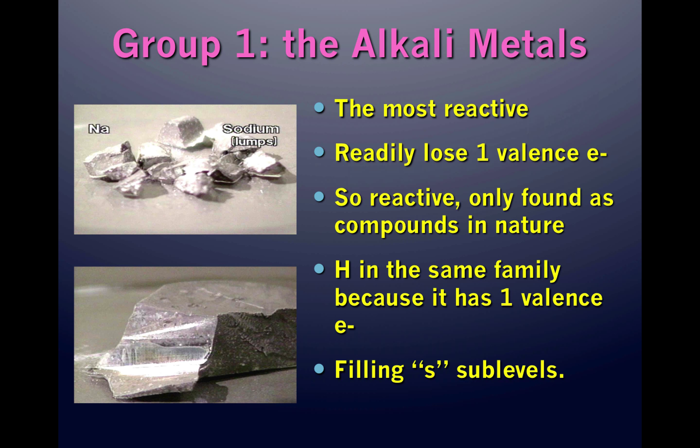The group 1 metals are called the alkali metals. They are the most reactive metals and readily lose one valence electron. They are so reactive that they are only found as compounds in nature — for example, you cannot find a hunk of sodium on the street; instead, sodium is most often found as sodium chloride, or salt.